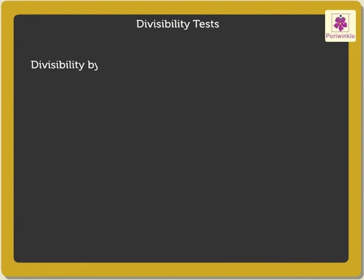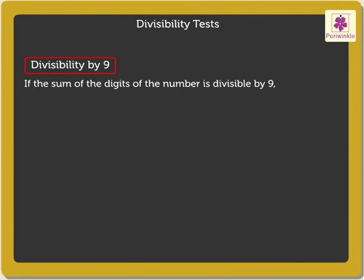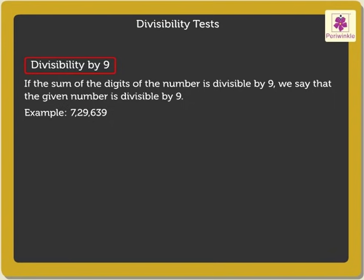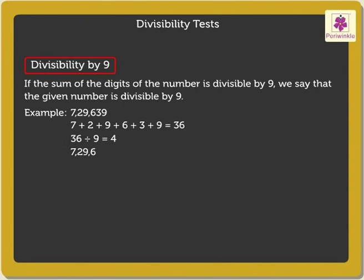Divisibility by 9. If the sum of the digits of the number is divisible by 9, we say that the given number is divisible by 9. For example, look at the number 7,29,639. Here, on adding the digits 7, 2, 9, 6, 3, and 9, we get the sum as 36, which is divisible by 9. Thus, 7,29,639 is also divisible by 9.